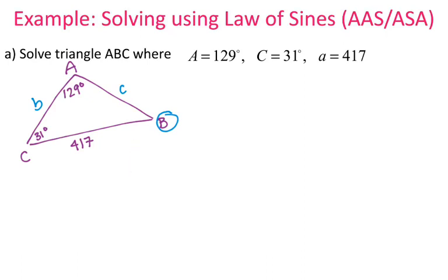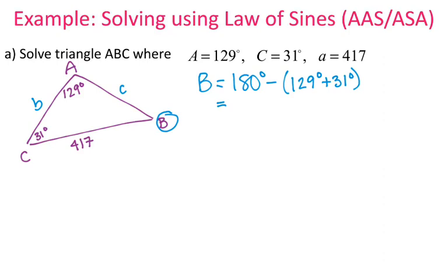I'm going to start by finding angle B because it is the easiest. Angle B equals 180 minus angle A minus angle C. Since angles in a triangle add up to 180 degrees: 180 minus 129 minus 31 gives me angle B equals 20 degrees.